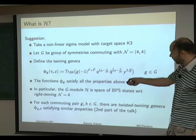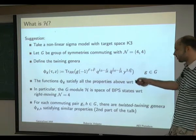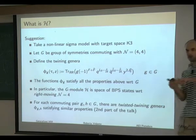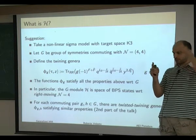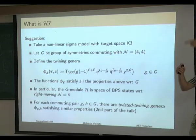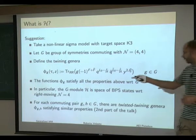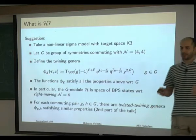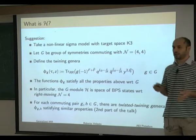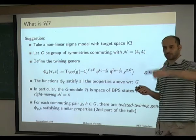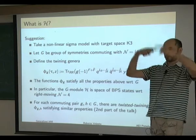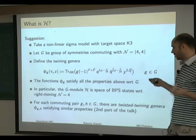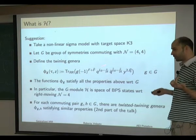The phi_G twining genus is given by a path integral on a torus where we impose the fields to be periodic under one cycle of the torus, while around the other cycle they are only periodic up to the transformation G. This means we cannot expect this path integral to be invariant under the full modular group SL(2,Z) — it will only be invariant under the subgroup that fixes these periodicity conditions, which is Gamma-zero(n).